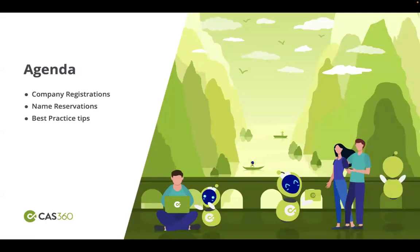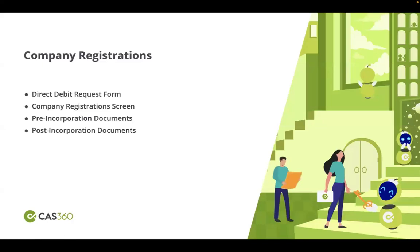The agenda for today's session is that I will take you through the company registrations process on CAS360, show you the name reservation screens, and share some best practice tips. On company registration specifically, I will first show you the direct debit request form and how an RA04 form is generated, then the company registration screen, how to start the application and fill in the details, and then we prepare the pre-incorp documents including your RA04 form. After lodging, I will also show you the post-incorp documents that CAS360 prepares.